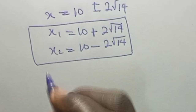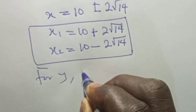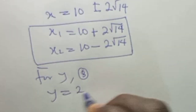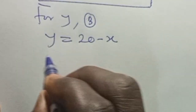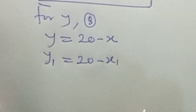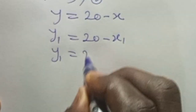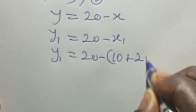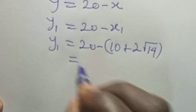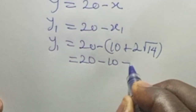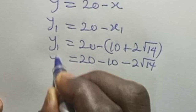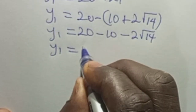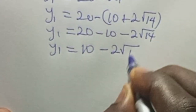For y, using equation 3 where y equals 20 minus s: y1 equals 20 minus s1, which is 20 minus (10 plus 2 root 14). Opening the bracket gives 20 minus 10 minus 2 root 14, so y1 equals 10 minus 2 root 14.